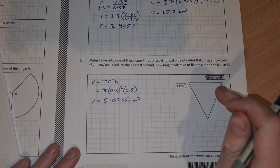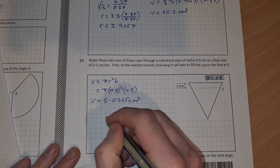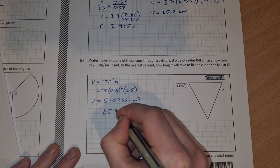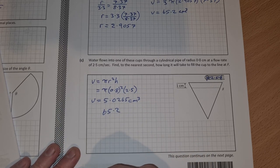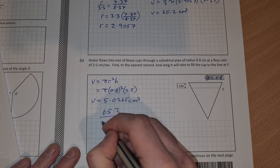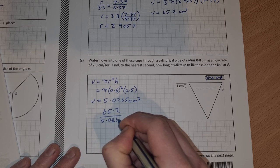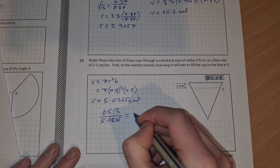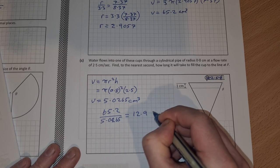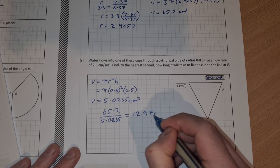The volume of water going in every second is 5.0265 cubic centimeters. To find how long it takes to fill up the cup to the line, we just need to divide our 65.2 that we got previously, divide that by 5.0265, and you end up with an answer of 12.97 seconds. They want it correct to the nearest second, so that's approximately equal to 13 seconds.